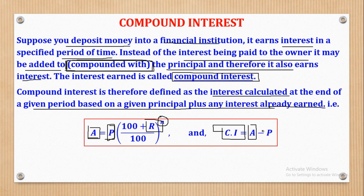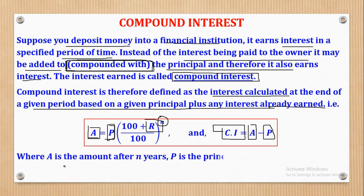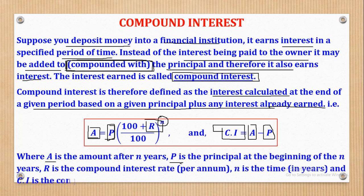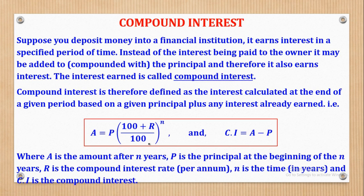A is the amount after N years. P is the principal at the beginning of N years. R is the compound interest rate, also expressed per annum. N is the time in years, and CI is the compound interest. These are the two formulas we shall be using in this video, so you have to master them.